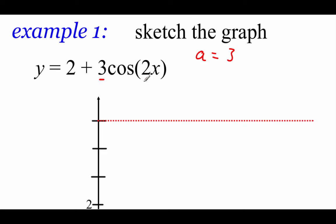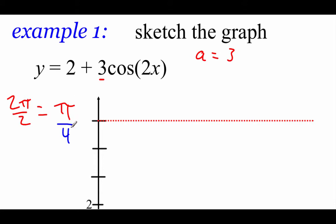Next we look at the b value to find the period. We go 2π over b, so in this case 2π over 2, giving us a period of just π. We split that into four equal parts to find our x values. There is no c value on this one, so there's no left or right shift.